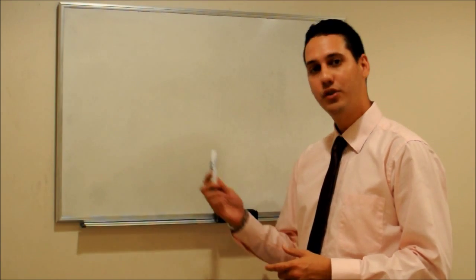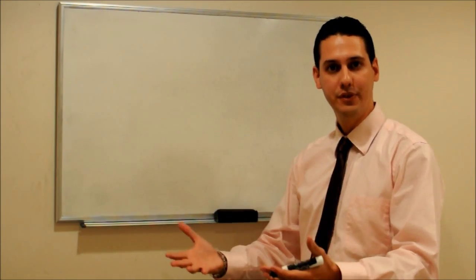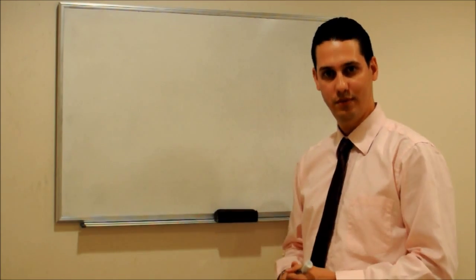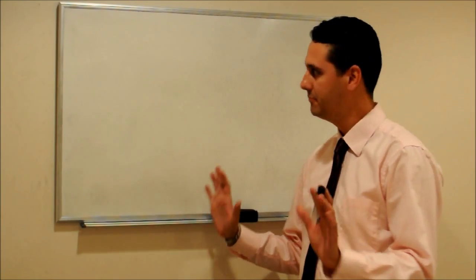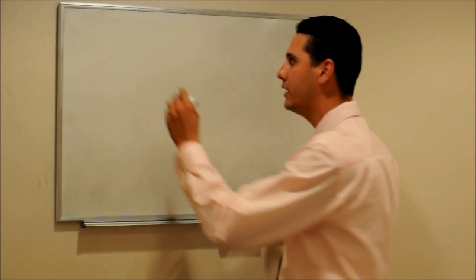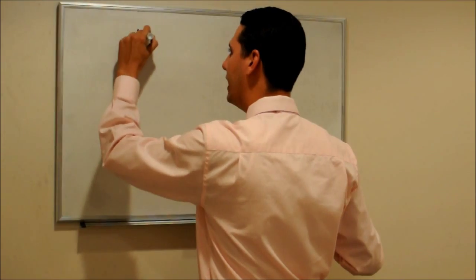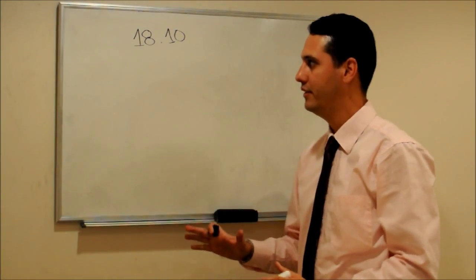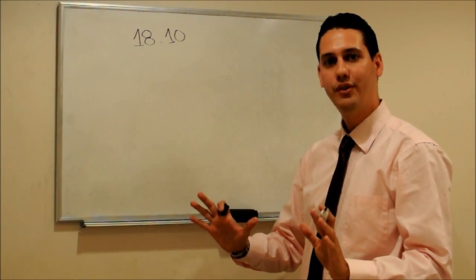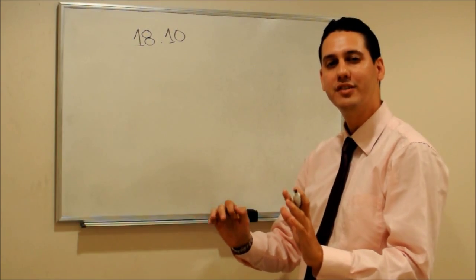The objective of this course is to show you my algorithms so you can do the same I do. So let's start with simple calculations. For example let's say we want to multiply 18 times 10. The goal here is to show you that we need to start from the beginning and we need to understand numbers.